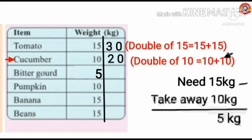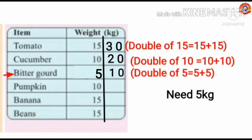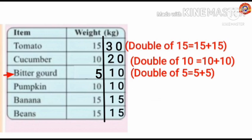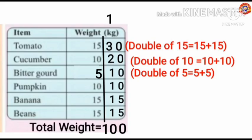So we need only 5 more kilograms. Take the next item, bitter gourd — its weight is 5 kilograms. Double of 5 is 5 plus 5 equals 10 kilograms. Now we have reached the required 30 kilograms. Adding all the weights together: the total comes to 100 kilograms — that is one quintal.